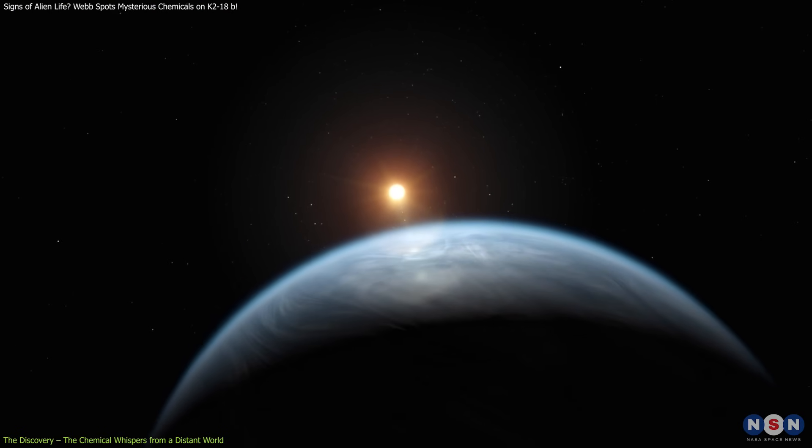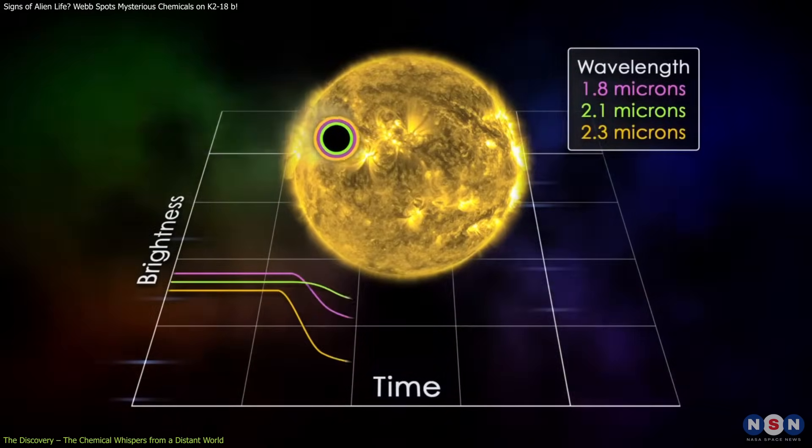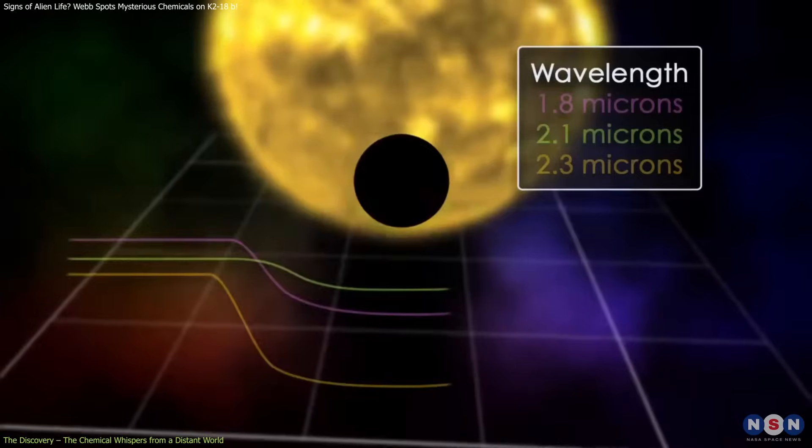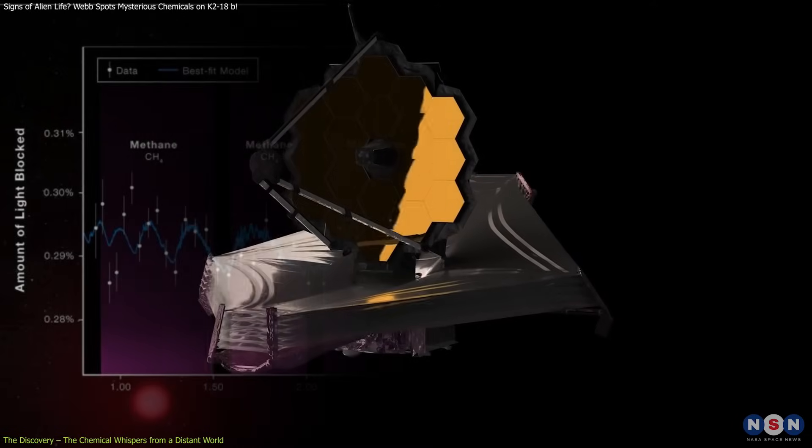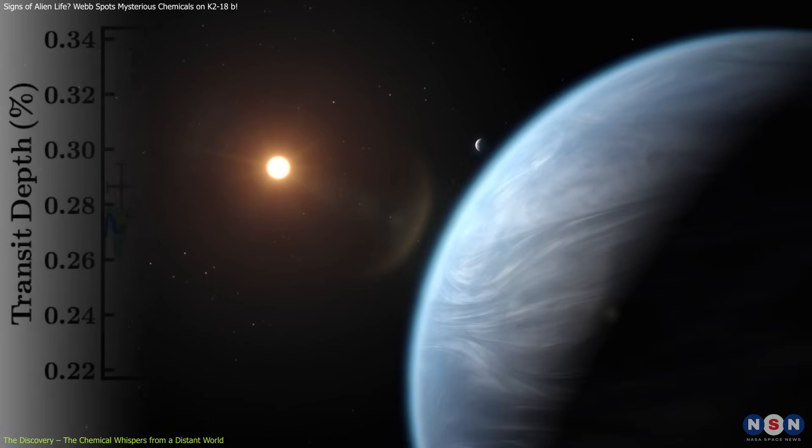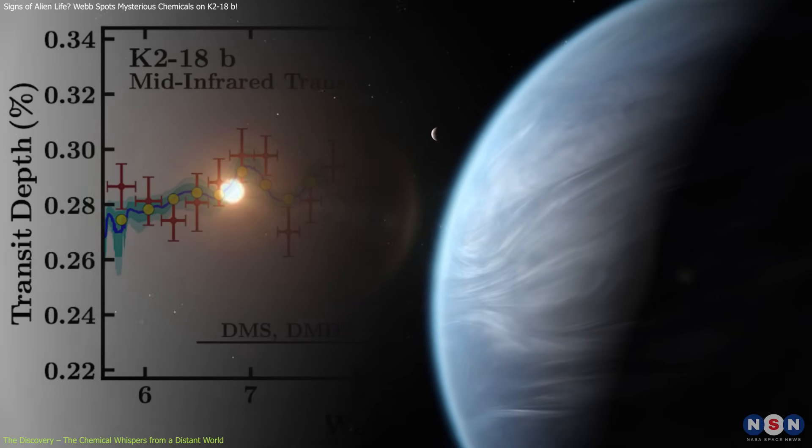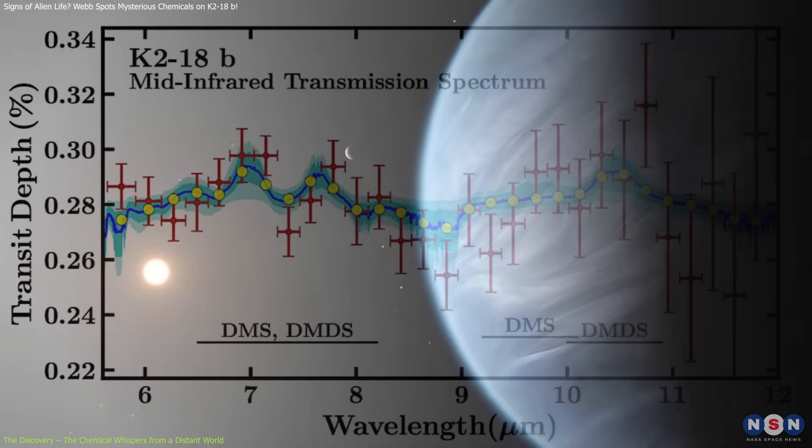As K218b passed in front of its red dwarf star, Webb captured starlight that had filtered through the planet's atmosphere. By analyzing how different wavelengths were absorbed, scientists were able to detect the presence of specific molecules. What stood out were chemical signatures that matched dimethyl sulfide (DMS) and dimethyl disulfide (DMDS).